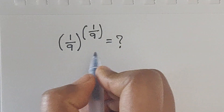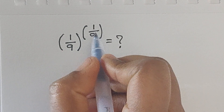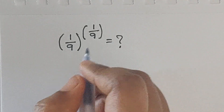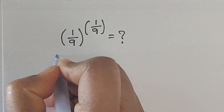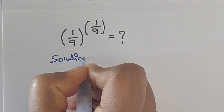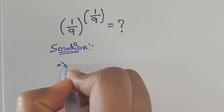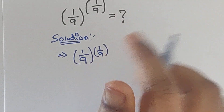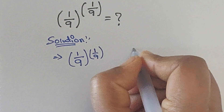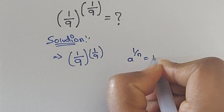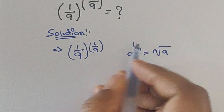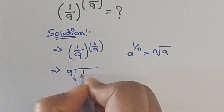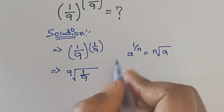Hello everyone, welcome back to our channel. Here we have one problem: (1/9) to the power of 1/9. How do we solve this without using a calculator? I will show you how. For the solution, we apply the formula a to the power of 1/n equals n-th root of a. So here we can write the 9th root of 1/9.